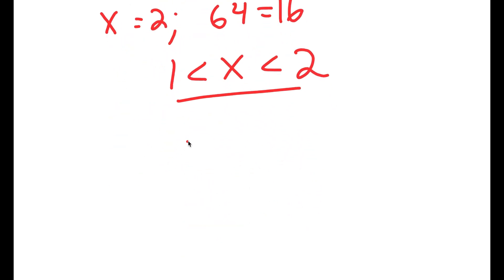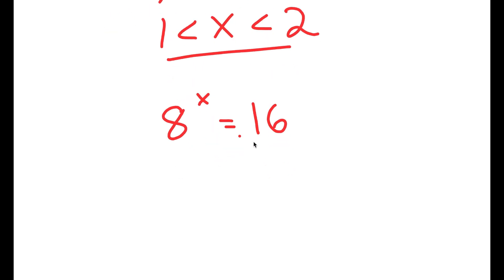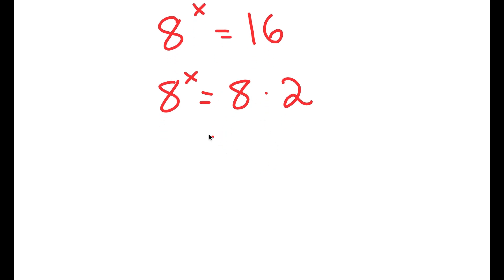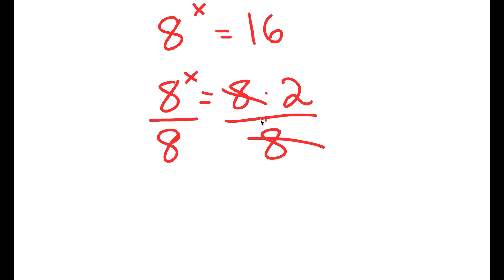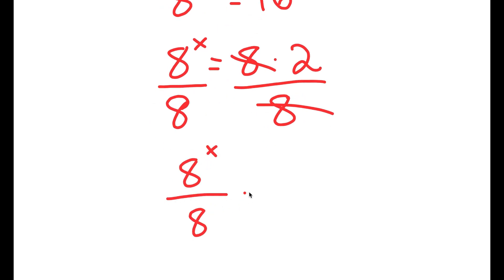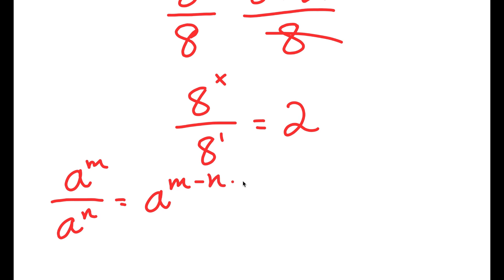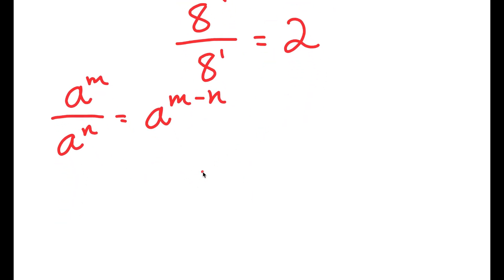How are we going to actually solve this and find the exact value of x? Well, what I can do is rewrite 16 as 8 times 2. Now I'm going to divide both sides by 8, so these two cancel out, and I get 8 to the power of x over 8 is equal to 2. If I have something in the form a to the power of m over a to the power of n, this equals a to the power of m minus n. So 8 to the power of x over 8 to the power of 1 equals 8 to the power of x minus 1, which is equal to 2.